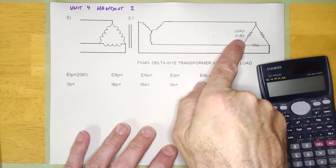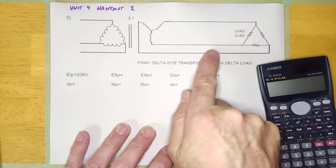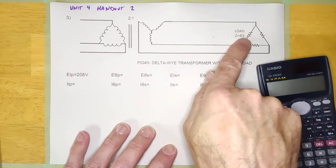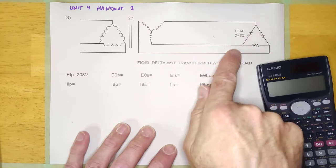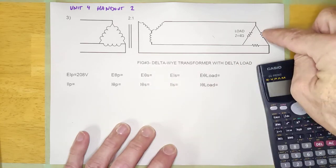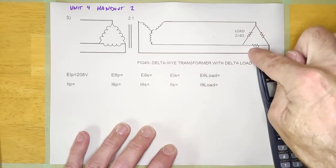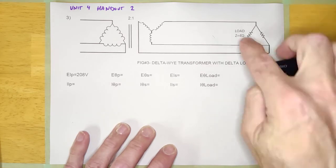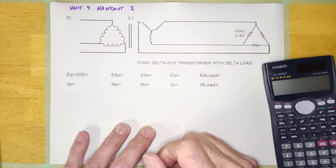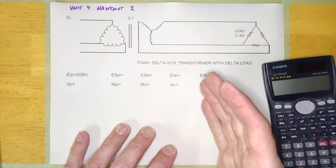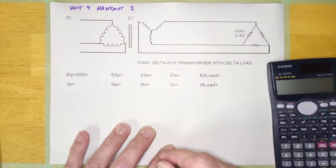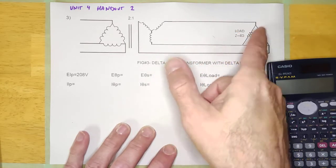First thing I need to talk about is this: notice how it says Zed. The impedance of this load is 4 ohms. Anytime you see that, where it's labeled as the impedance, it refers to each one of these resistors. So this would be 4 ohms, and so would this one. I just don't want to put it in there multiple times. Anytime you see information about the load, it will always apply to each of the three loads that make up the three-phase load. So: 4 ohms, 4 ohms, 4 ohms.